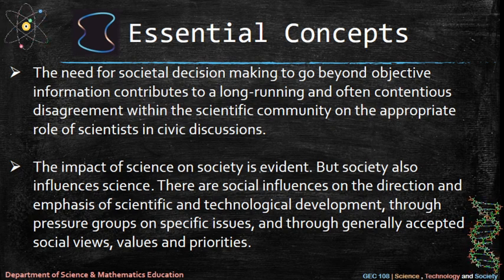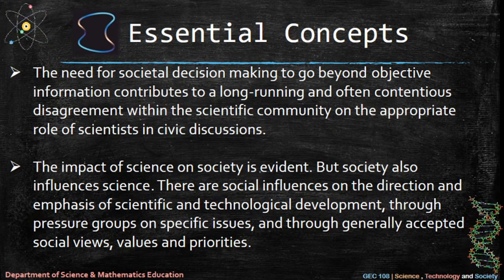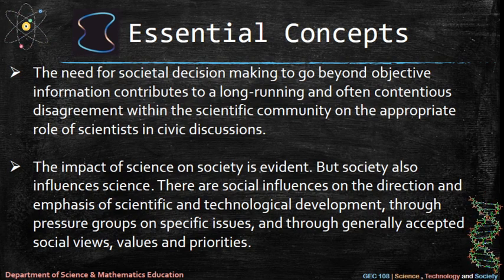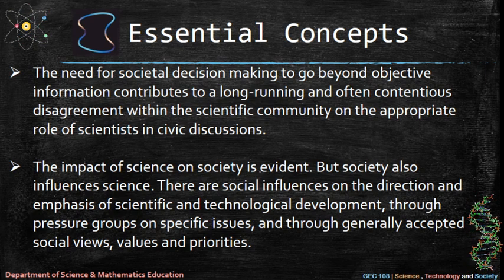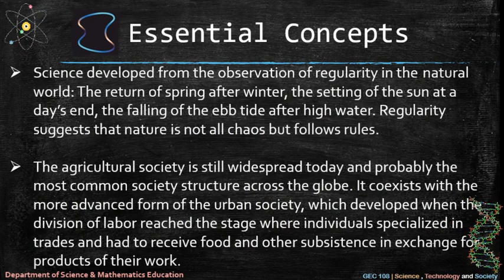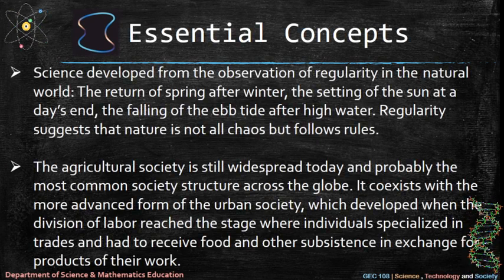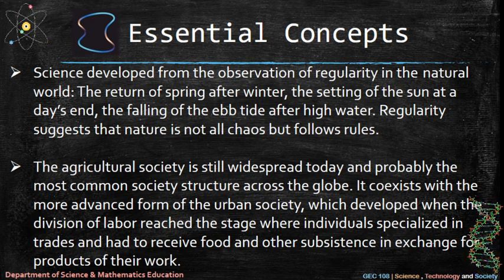The impact of science on society is evident, but society also influences science. There are social influences on the direction and emphasis of scientific and technological development — through pressure groups on specific issues, and through generally accepted social views, values, and priorities. Science developed from the observation of regularity in the natural world.